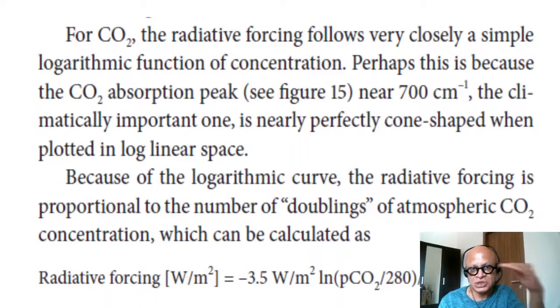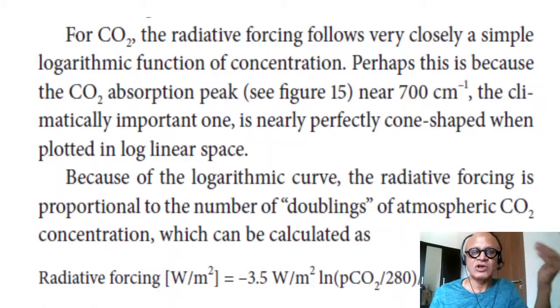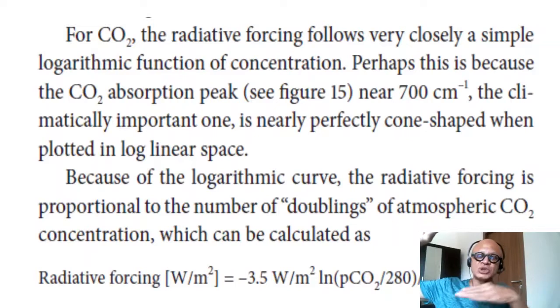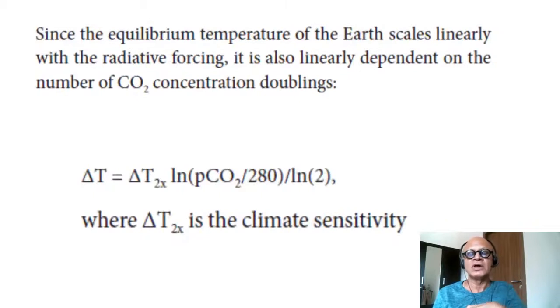...which is the baseline of the pre-industrial atmospheric concentration, divided by natural log of 2, which is because of the doubling that we are talking about. Remember the climate sensitivity that we talked about, where you ramp up the CO2 to double the concentration of a given base and then you keep it there till equilibrium to see what the warming we will end up with. Since equilibrium temperature of the earth scales linearly with radiative forcing, it is also linearly dependent on the number of CO2 concentration doublings, which means if we plot the cumulative CO2 versus global warming, that line is almost linear.